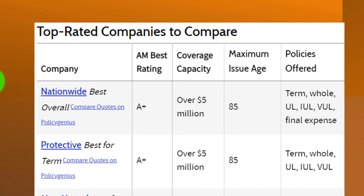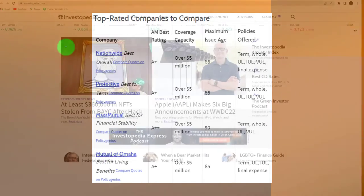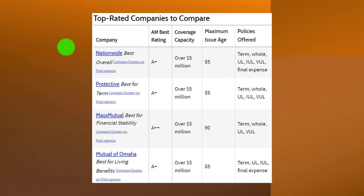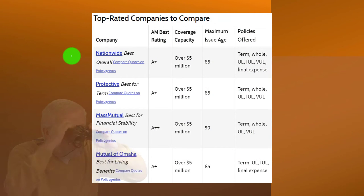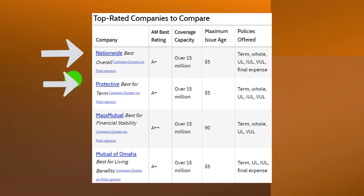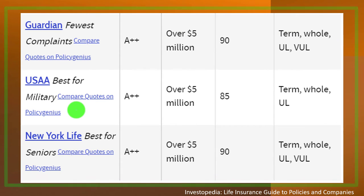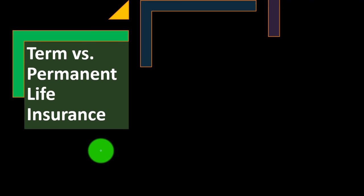Top rated companies to purchase from — you can take a look at these from Investopedia. If you're trying to do comparisons, you can look at some of these and do your own research from there: Nationwide, Protective, Mass Mutual, Mutual of Omaha, and so on. We might go into a bit more on those lists later.